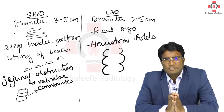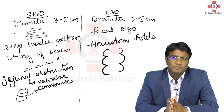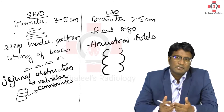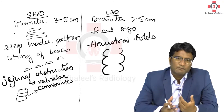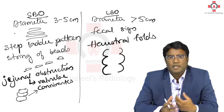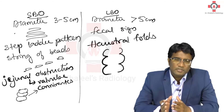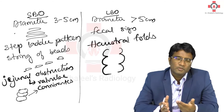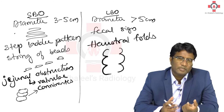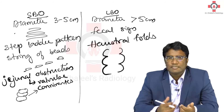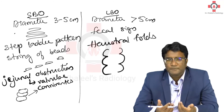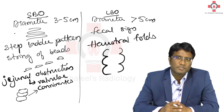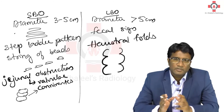To summarize: small bowel obstructions show central bowel loops; large bowel obstructions show peripheral bowel loops. Small bowel obstruction will have a step ladder pattern or string of beads appearance. Large bowel obstruction will show a fecal sign and haustra folds. In jejunal obstruction, you see valvulae conniventes, which are plica circularis mucosal folds running through and through the bowel wall, whereas haustra run only at the periphery. Diameter in small bowel obstruction is 3–5 cm; in large bowel obstruction it exceeds 5 cm.